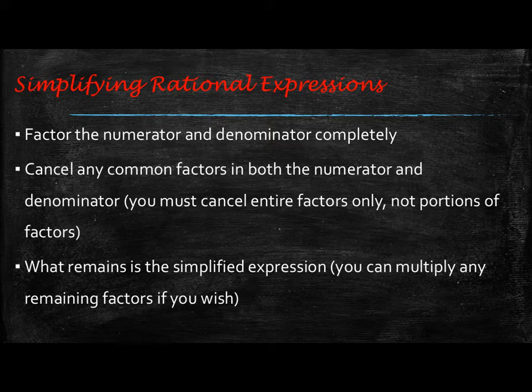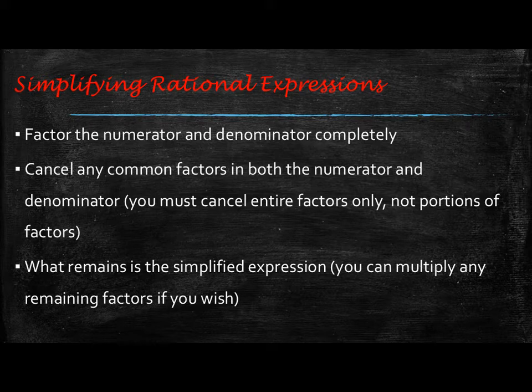Let's review first from the previous unit on simplifying rational expressions. The first thing you want to do is factor the numerator and the denominator completely. Then you can cancel any common factors in both the numerator and the denominator. You must cancel entire factors only, not portions of factors. Then what remains is the simplified expression. You can multiply any remaining factors if you want, but you do not have to.